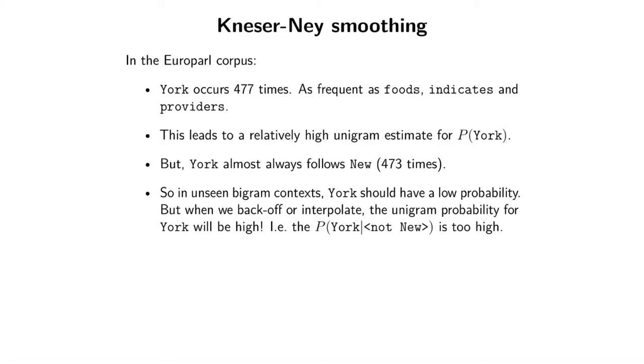It introduces one new idea and it's relatively simple, but you need to just be awake a little bit to understand this idea. In the Europarl corpus, this corpus of European Parliament, the word York occurs 477 times. That's actually quite a lot given that most words only occur once or twice. It's as common as foods and the word indicates and providers. This means that if you look at the unigram probability for the word York, just York on its own, this is actually quite high.